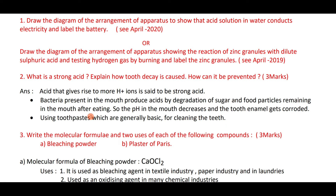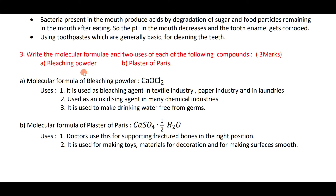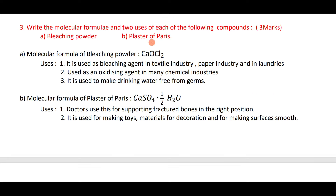Molecular formula of bleaching powder: CaOCl₂. It is used as a bleaching agent in textile industry, paper industry, and laundries; as an oxidizing agent in industries; and to make drinking water free from germs. Molecular formula of plaster of paris: CaSO₄·½H₂O. Uses: doctors use it to support fractured bones; making toys, decorative materials, and smooth surfaces.